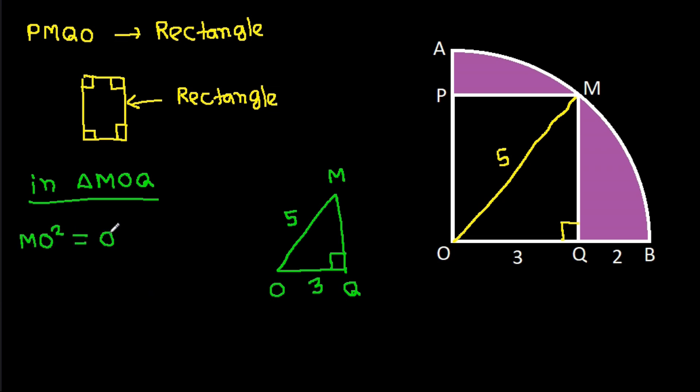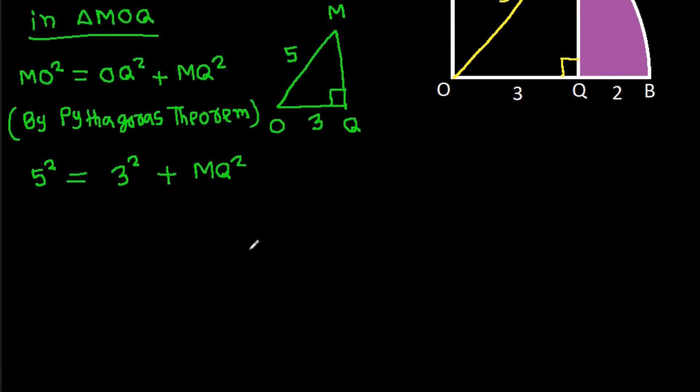By Pythagorean theorem, MO squared will equal OQ squared plus MQ squared. MO is 5, so 25 equals 9 plus MQ squared. Therefore, MQ squared equals 25 minus 9, and MQ squared is 16.